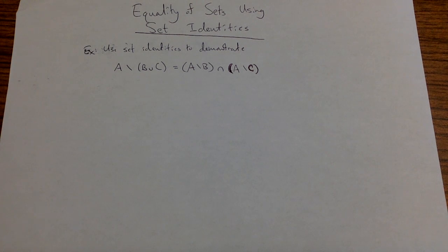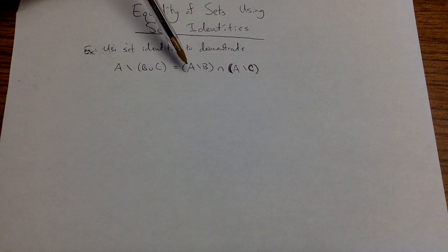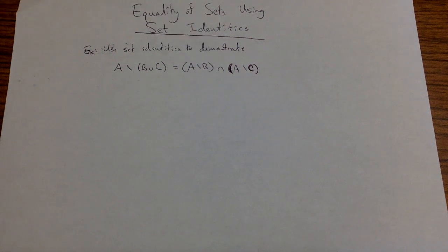Let's talk about showing the equality of sets using set identities. Suppose I come across an example like this: use set identities to demonstrate that A minus B union C is equal to A set minus B intersect A set minus C.